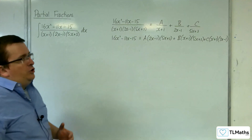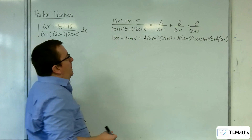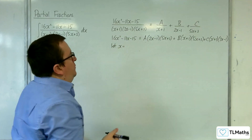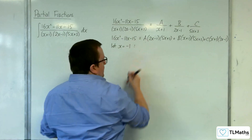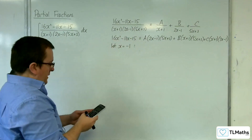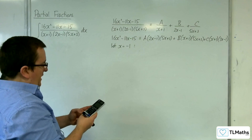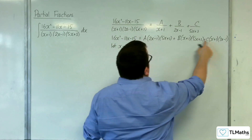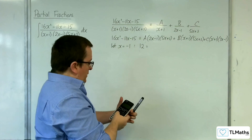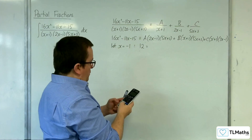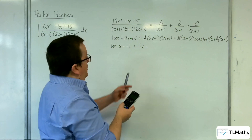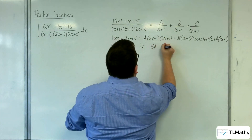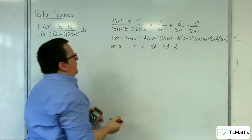I'm now going to choose some values of x to substitute in to knock out these terms. If we start with x equals minus 1, substituting into the left-hand side, we get 16 plus 11, take away 15, so 12. On the right-hand side, it knocks out two brackets, leaving just the A bracket. So we have 2 lots of minus 1, take away 1, times 5 lots of minus 1, plus 3, and that gives us 6 lots of A, so A must equal 2.